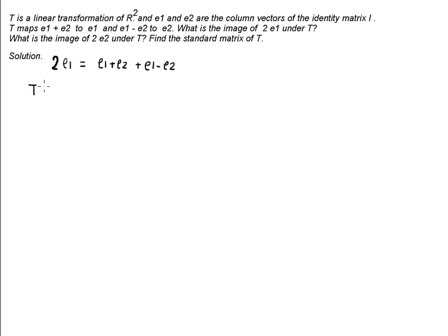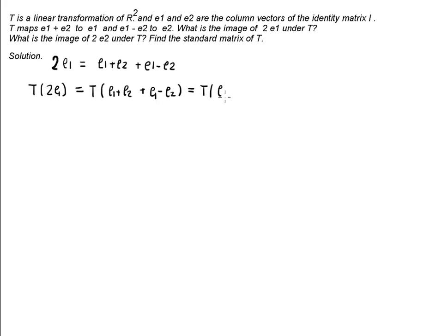Because twice E1 is this sum, we can find its image. So T of 2E1 is equal to T of (E1 plus E2) plus T of (E1 minus E2). Because T is linear, we have this image equal to T(E1+E2) plus T(E1-E2).